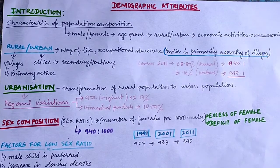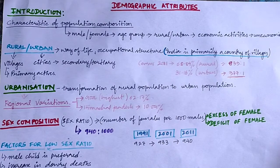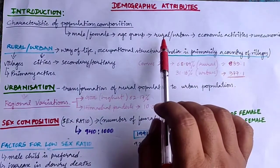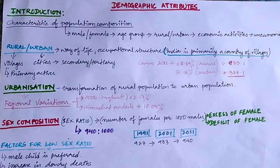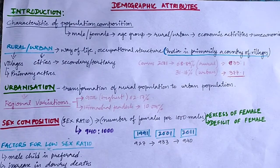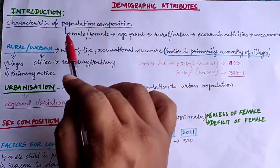Whenever we say the term population, the first thing that comes to mind is the number of people, and within that we have two different genders — male and female. Those males and females will be of different age groups like children, the working class, and senior citizens. Different age groups are present in the population, along with their place of residence, economic activities — whether primary, secondary, or tertiary — and some age groups who are dependent and cannot perform any economic activities.